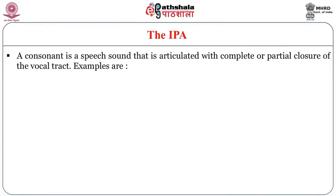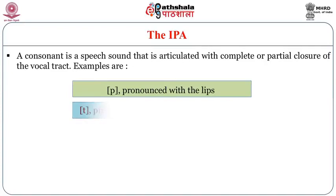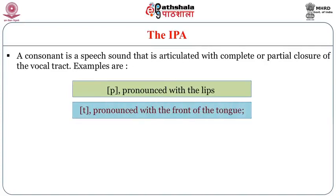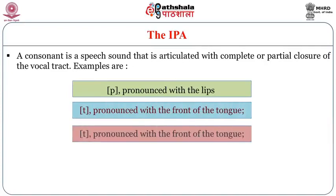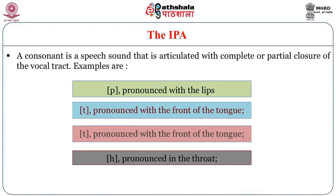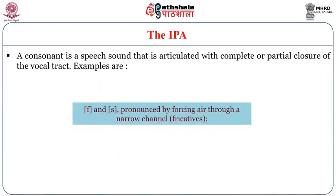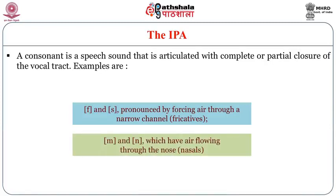A consonant as a speech sound is articulated with complete or partial closure of the vocal tract. Examples include sounds pronounced with the lips, with the front of the tongue, with the back of the tongue, pronounced in the throat, and produced by forcing air through a narrow channel — these are also known as fricatives. Finally, sounds like M and N, which have air flowing through the nose, are called nasals.